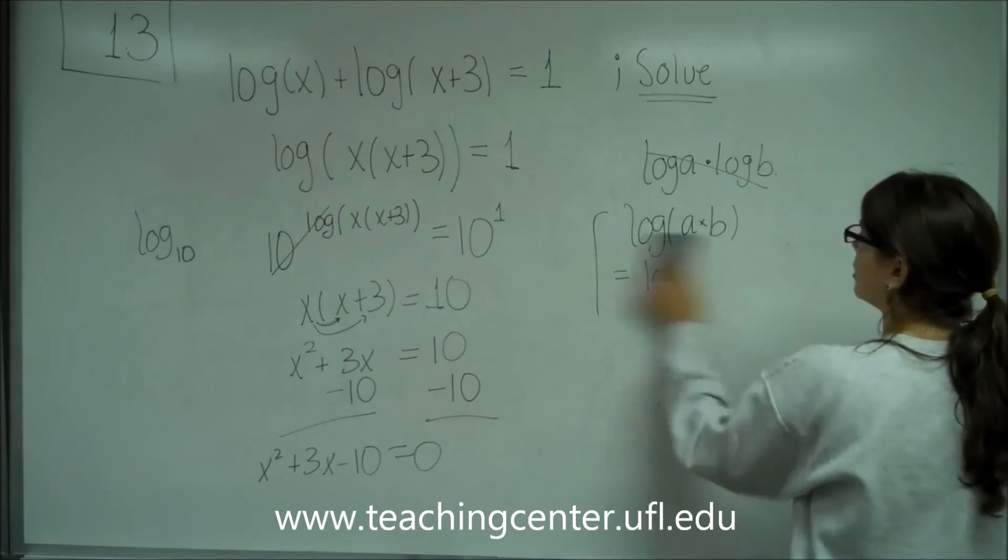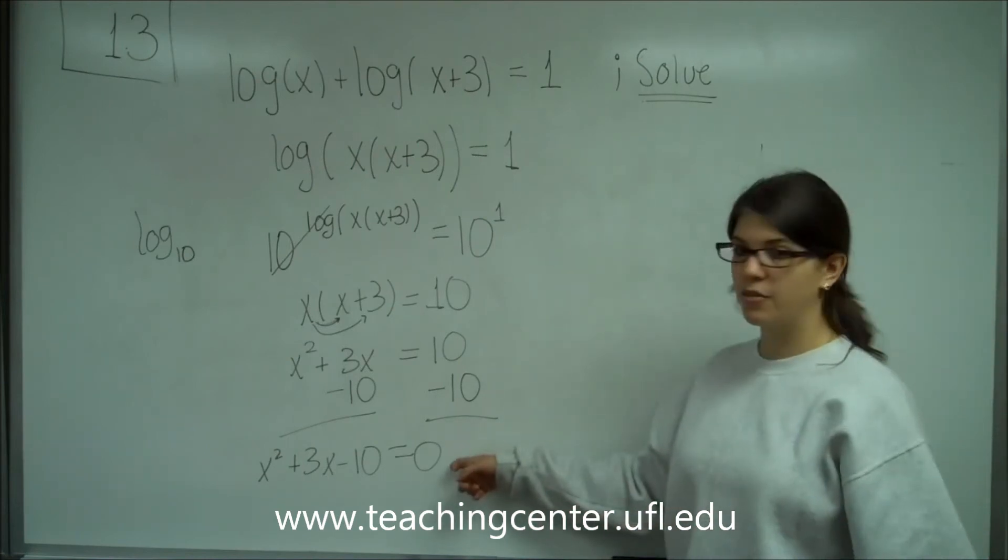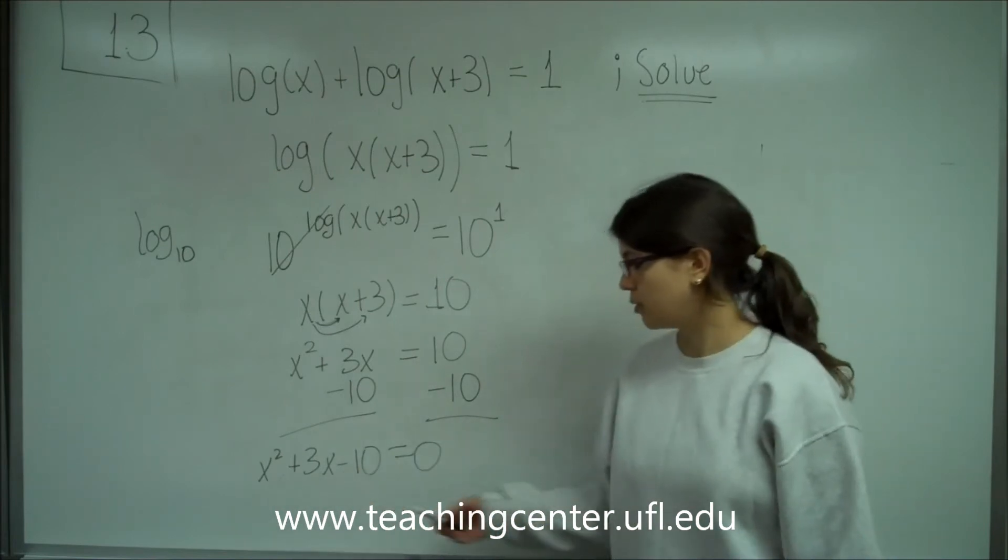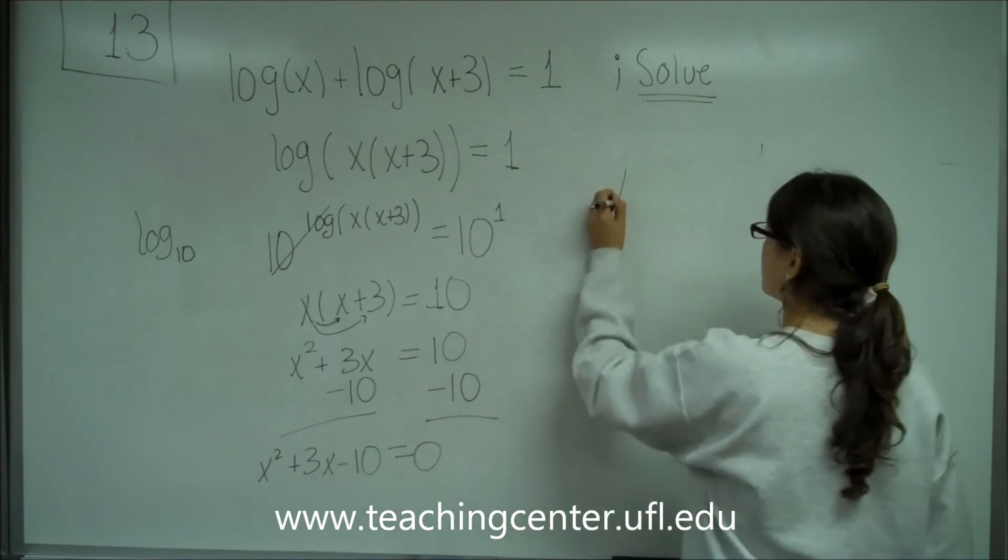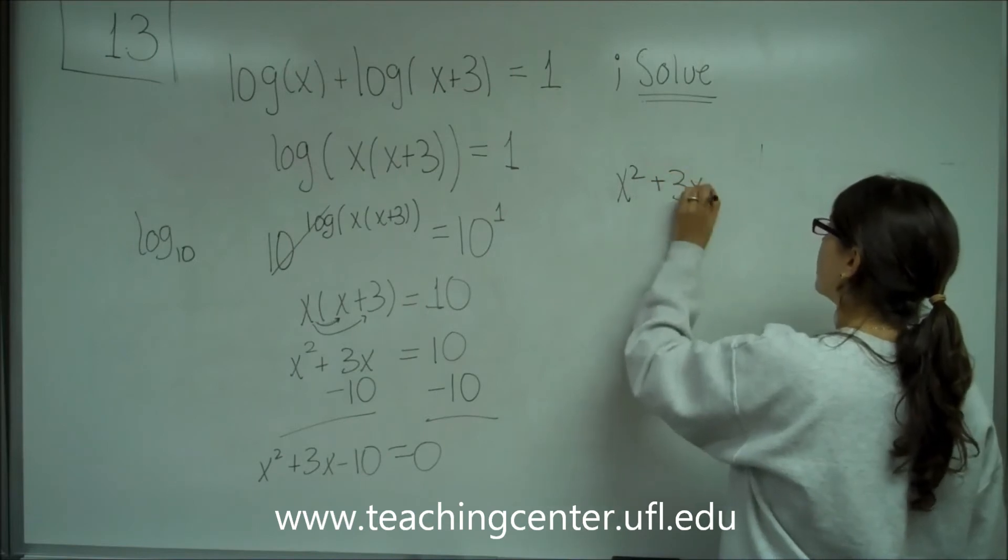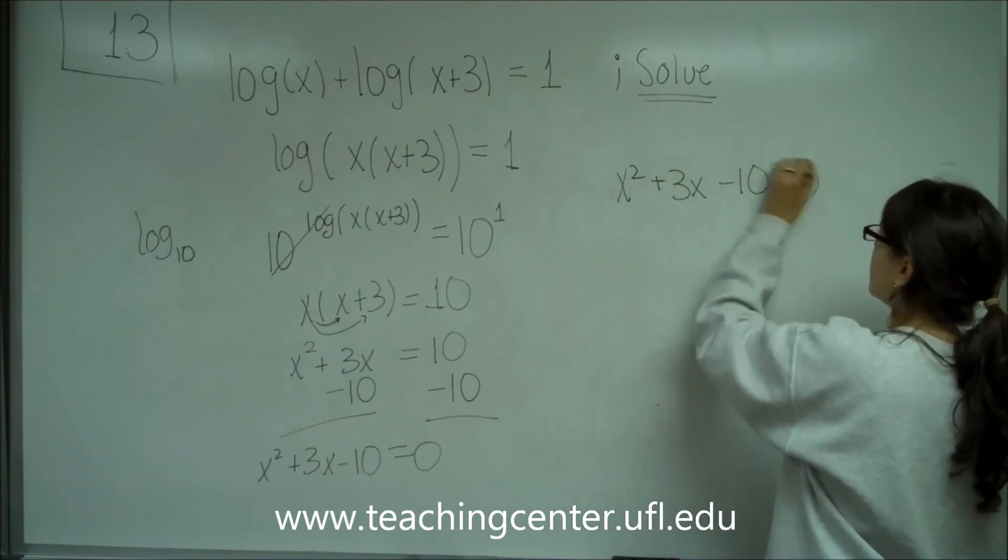So basically, from now on, all it is, once we've gotten it to this form, all it is is factoring to find the x's. So I could use a quadratic formula, or if it's factorable like this, that's a much simpler way of doing it.